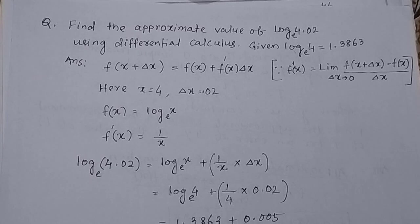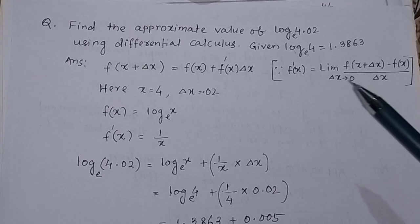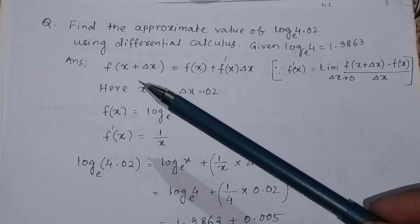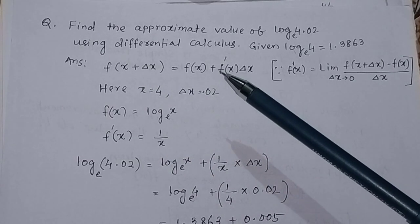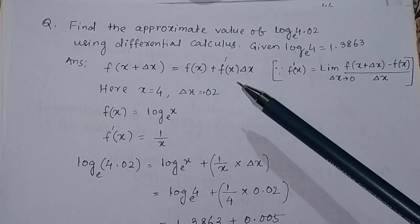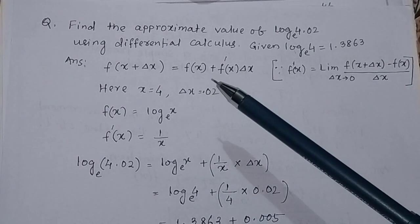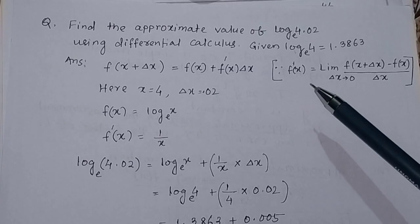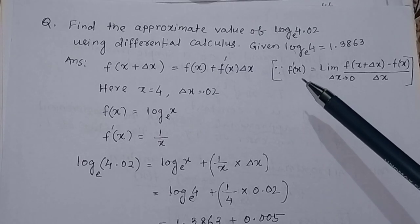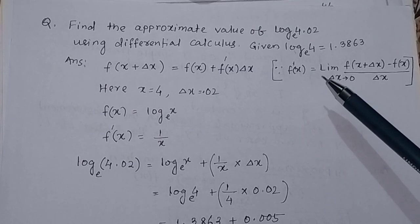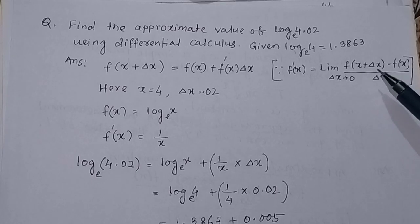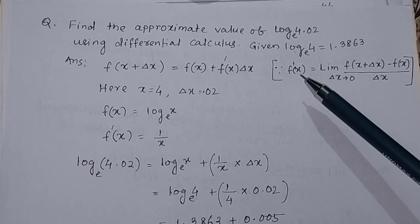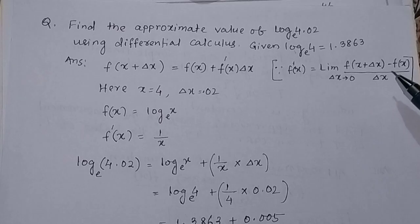To calculate the approximate value, we use the formula: f(x + Δx) = f(x) + f'(x)·Δx. This formula can be derived from the first derivative definition: f'(x) = limit of [f(x + Δx) − f(x)] / Δx, which gives f(x + Δx) = f(x) + f'(x)·Δx.